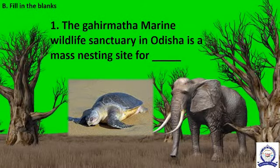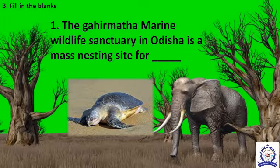Now see the fill in the blanks. The first question is: the Gahirmatha Marine Wildlife Sanctuary in Odisha is a mass nesting site for? The correct answer is Olive Ridley Turtles.